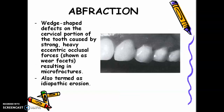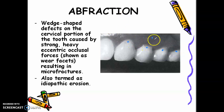Next is abfraction — a wedge-shaped defect on the cervical portion of the tooth caused by strong, heavy, eccentric occlusal forces resulting in microfracture. It is almost V-shaped, similar to abrasion. However, in abfraction, usually only one tooth is involved. Compared to abrasion, which is caused by toothbrushing and typically affects two to four teeth, abfraction involves only a single tooth.